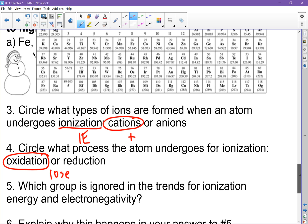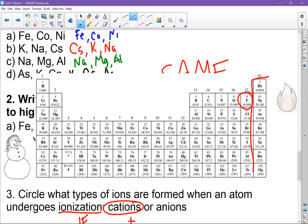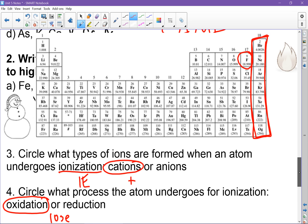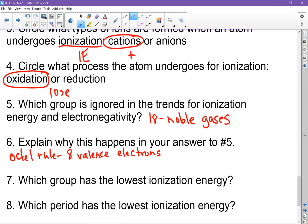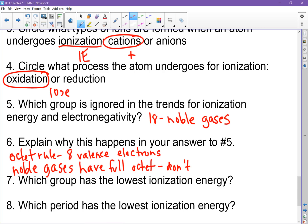One thing we haven't discussed: even though fluorine is the highest, there's still the entire group of noble gases — group 18 — and we ignore them. The reason is the octet rule: atoms want to have 8 valence electrons, but noble gases already have a full octet. Since they already have their 8 valence electrons, they don't do any oxidation or reduction, they don't use ionization energy or electronegativity, and they don't gain or lose any electrons — they're happy.